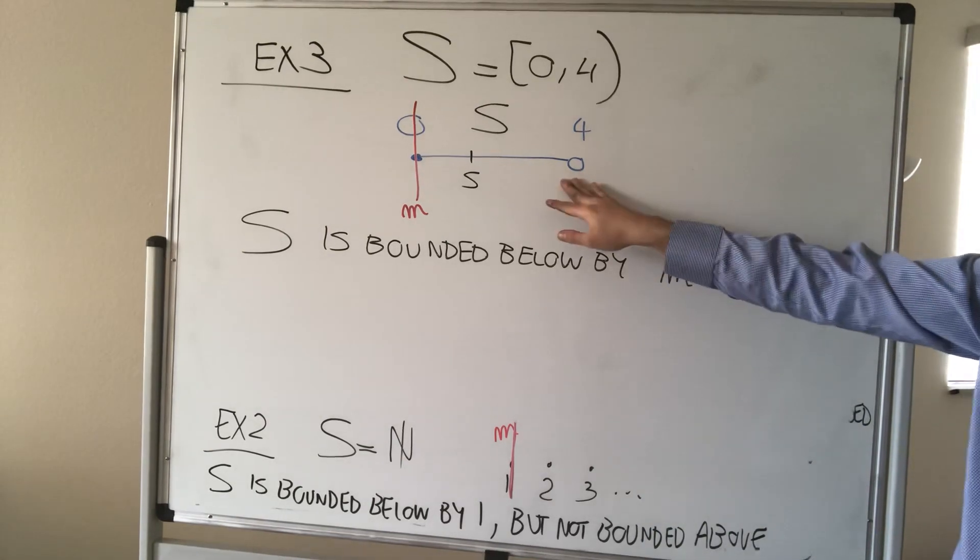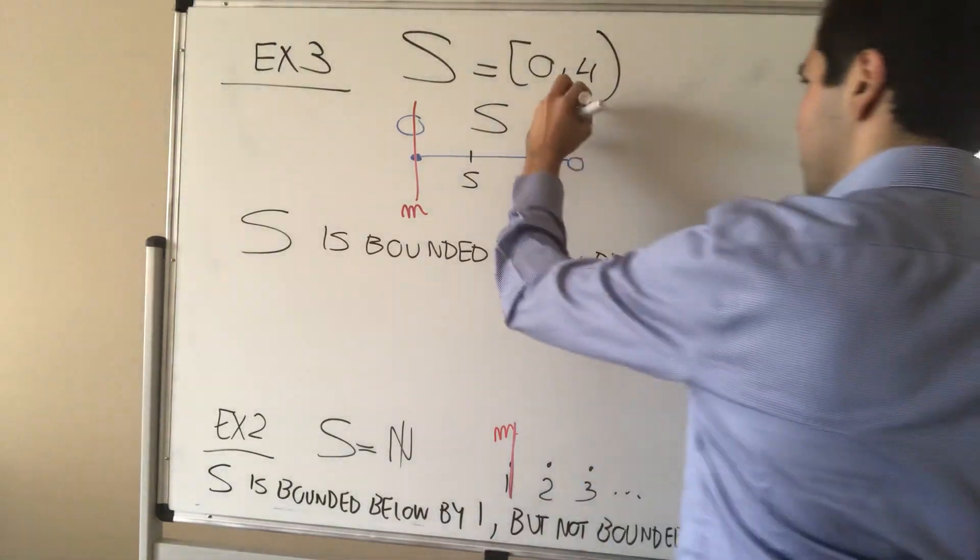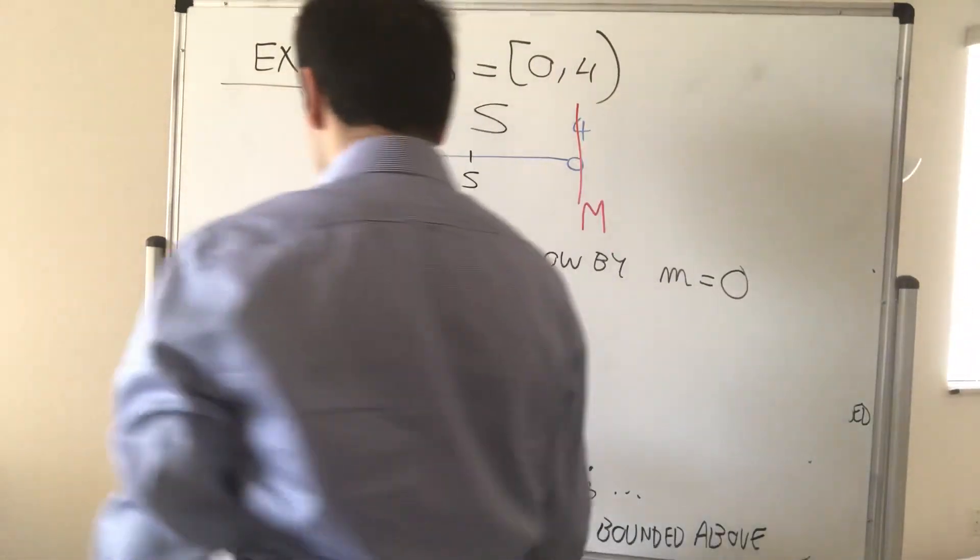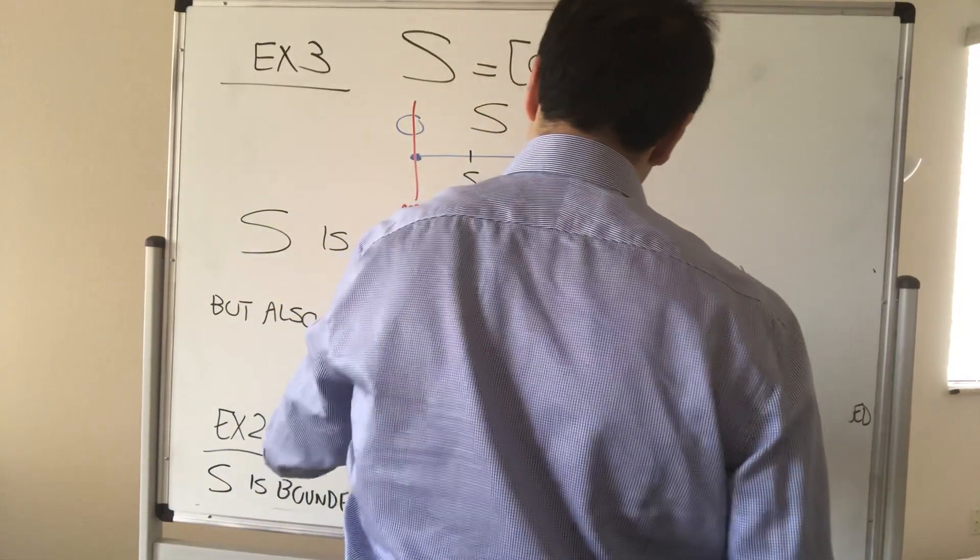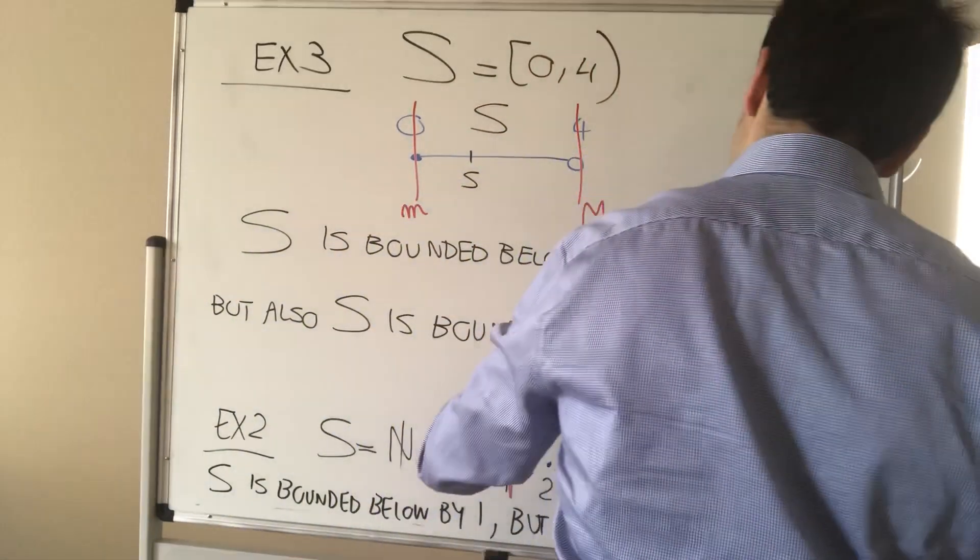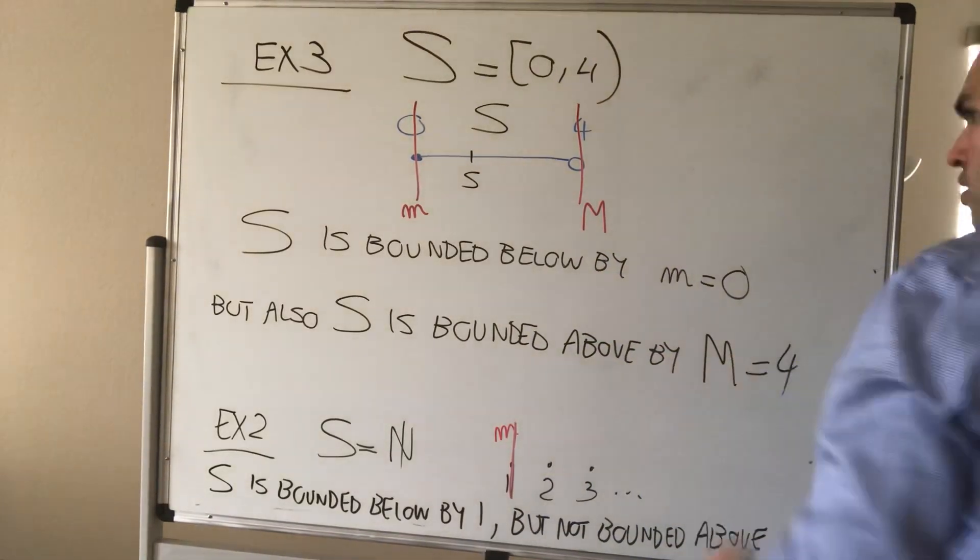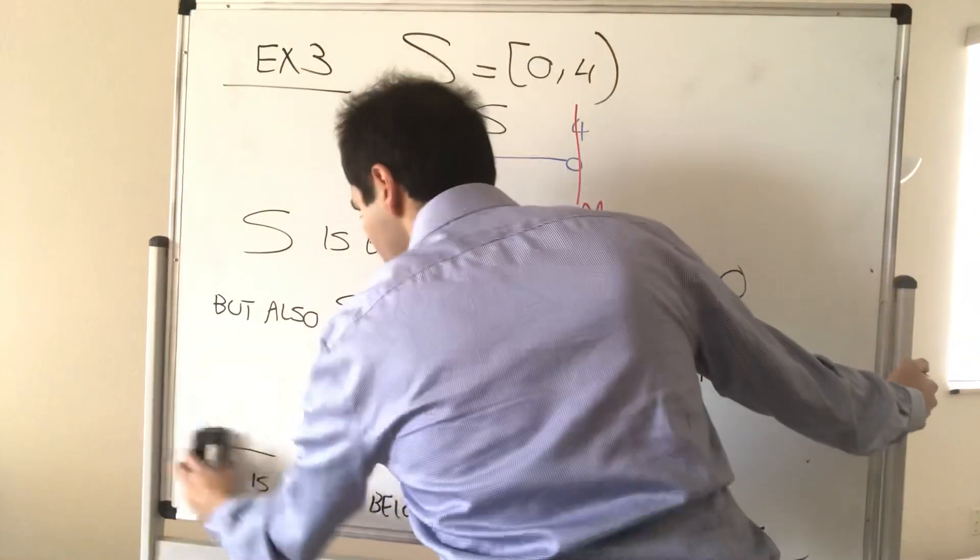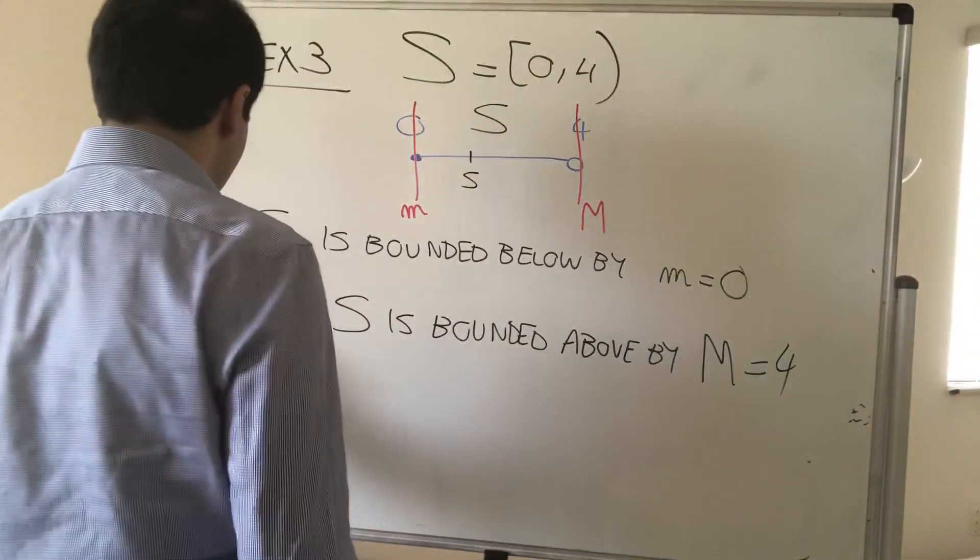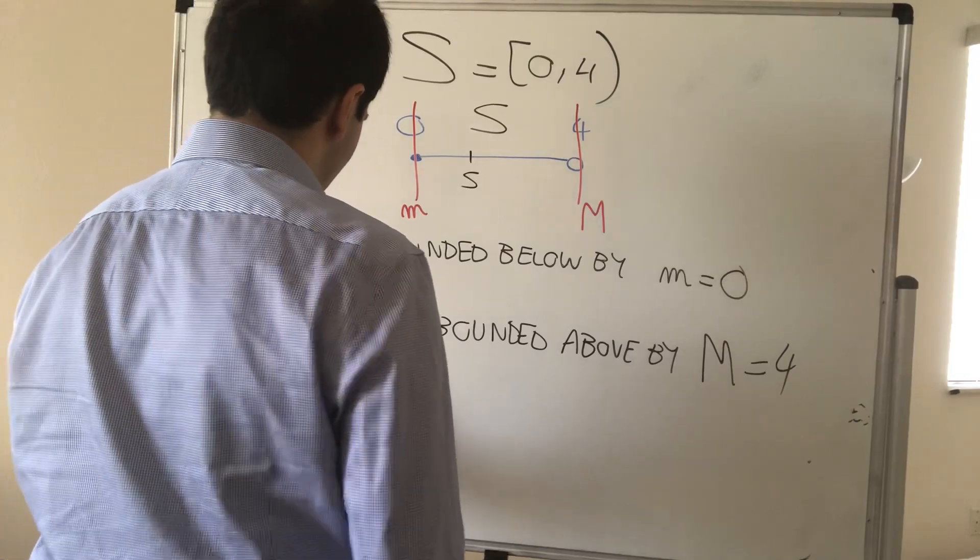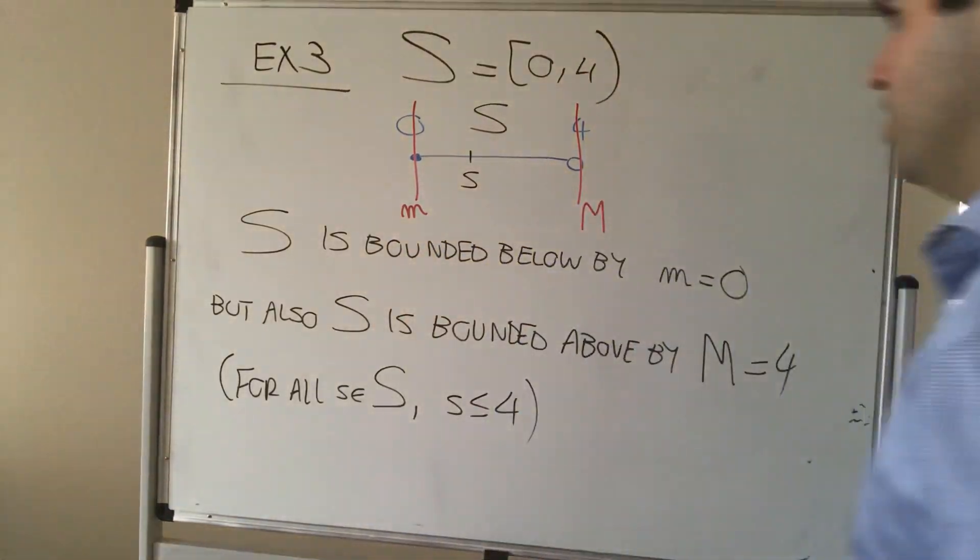But interestingly, even though four is not in your set, it is still true that four is an upper bound. But also, S is bounded above by M equals four. Again, why? Because if you take any element in your set, it's guaranteed to be less than or equal to four. So for all S in S, S indeed is guaranteed to be less than or equal to four.